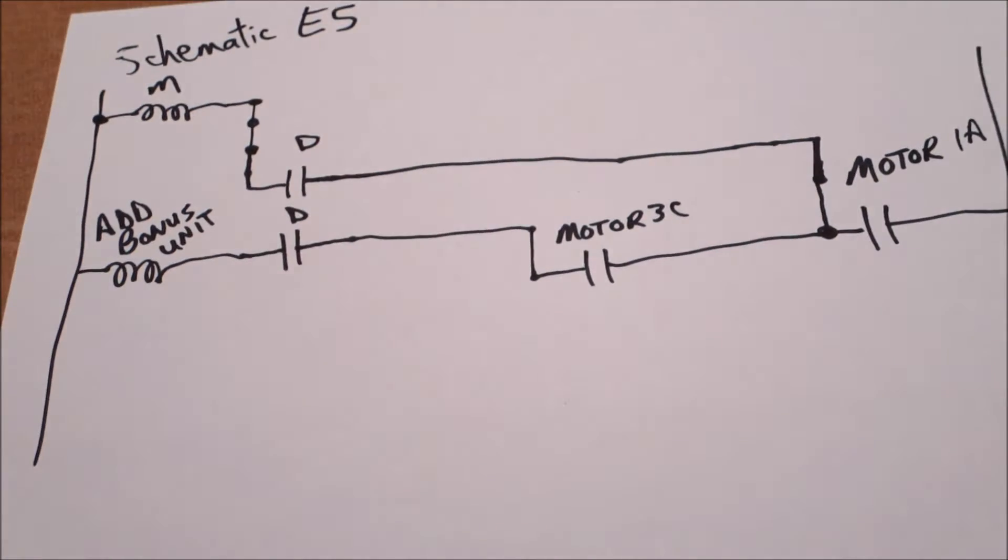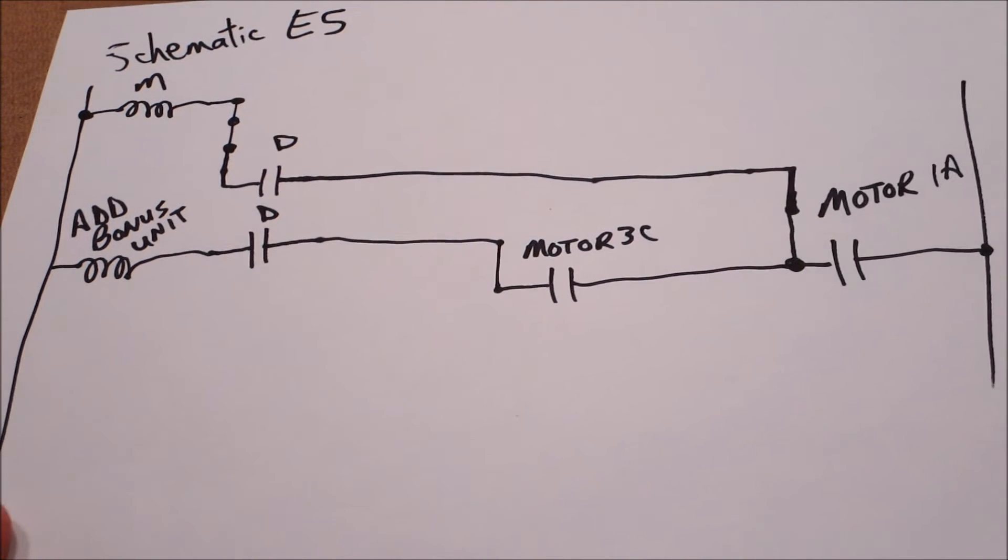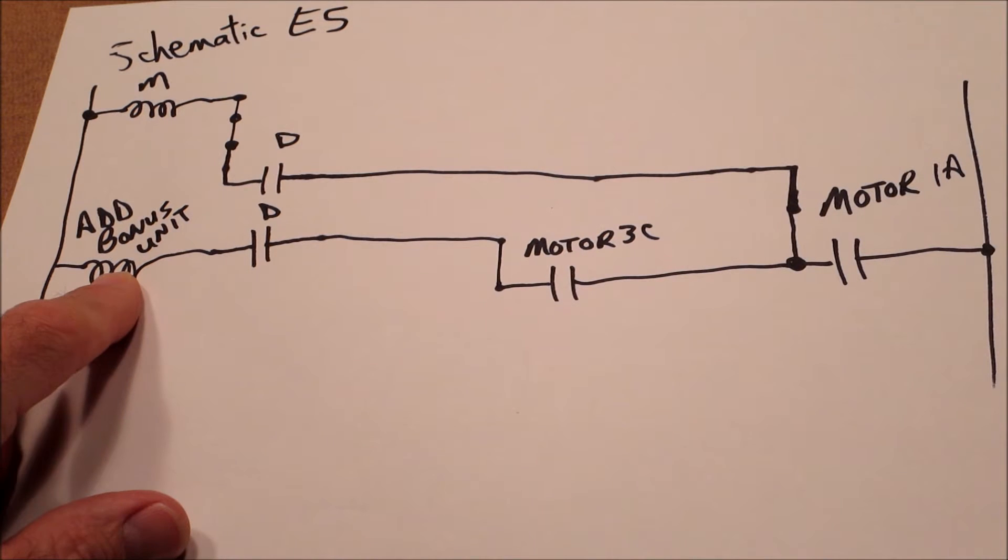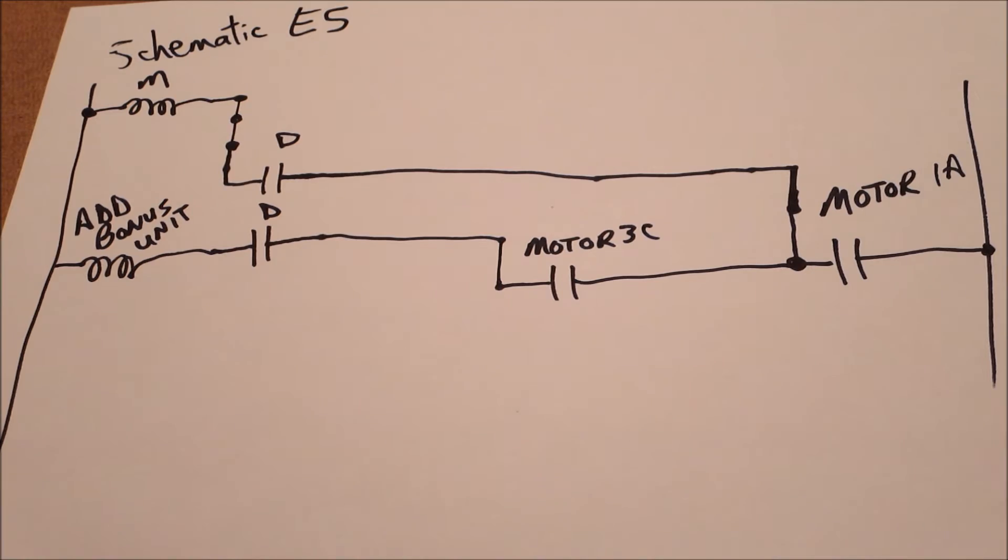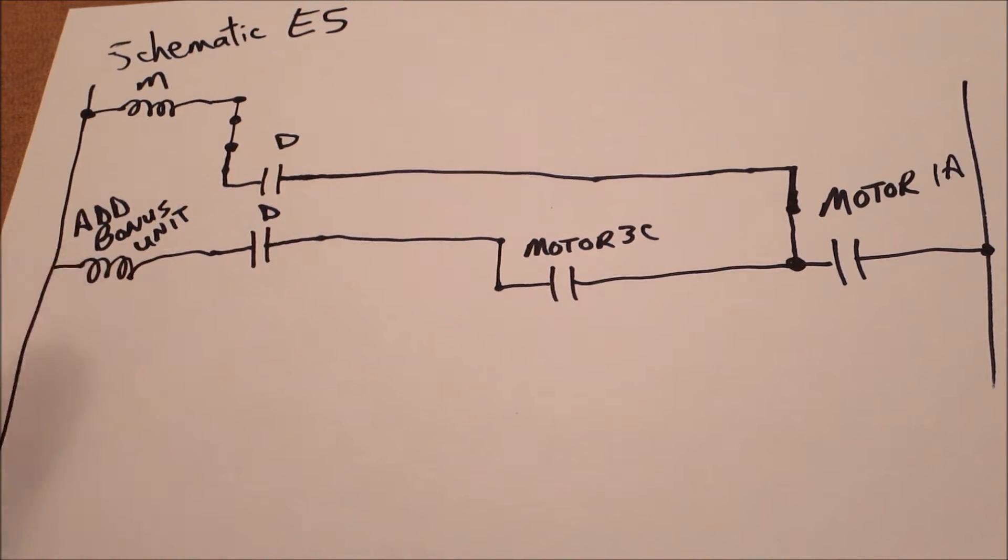All right, let's see if we can explain what's happening here. So you may remember this schematic from a previous episode where we were talking about the add bonus unit. Basically when this relay is energized, it's going to increment the add bonus, the bonus unit by one. So every time you get a thousand bonus, this thing is incrementing.